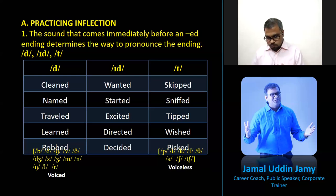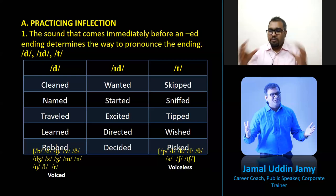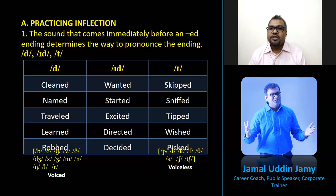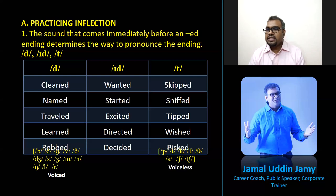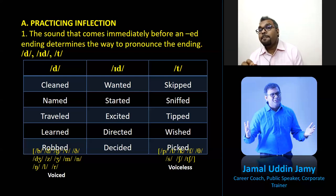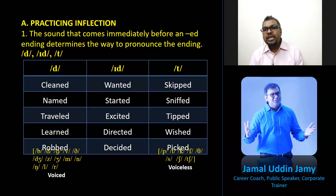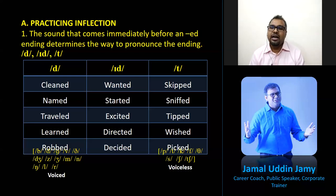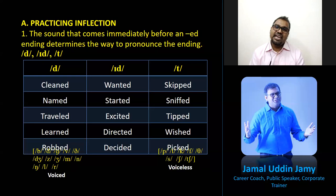The ultimate learning from this: when you add -ed, the pronunciation will be 'id,' not 'ed.' Our biological mechanism will help with words like 'cleaned,' 'named,' 'troubled,' 'learned,' 'robbed' — these take the 'da' sound. The last category takes the 't' sound: 'skipped,' 'sniffed,' 'tipped,' 'wished,' 'picked.' Be more focused on the middle 'id' portion — 99% of people in the subcontinent make this mistake, saying 'ed' instead of 'id.'